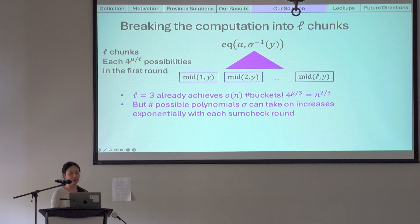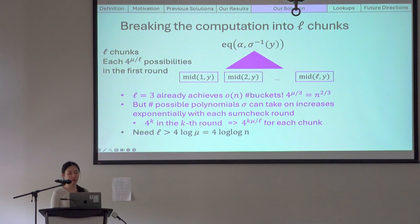Specifically, there are 4 to the k in the kth round, which implies 4 to the k times mu over L for each chunk. So after careful computation, which I will skip today, we found that we need L to be at least 4 log mu, and hence the log log n factors in our prover cost.